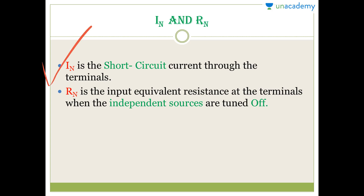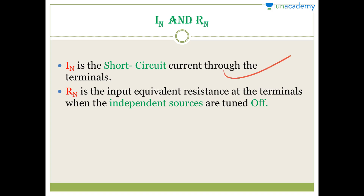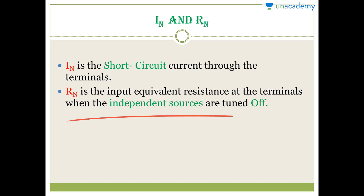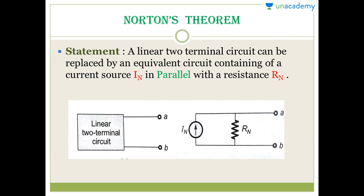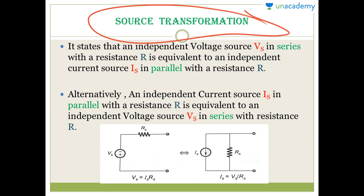To find I_N, this is the short circuit current through the terminal. For R_N, this is the input equivalent resistance at the terminal when independent sources are turned off. Note that R_N is always equal to R_th as well. Now let me tell you something regarding source transformation because we need it to solve our question.